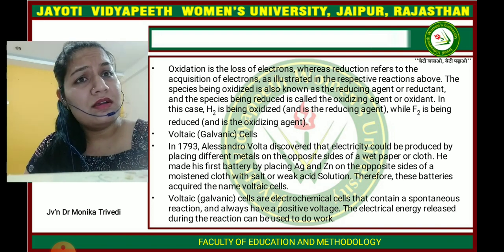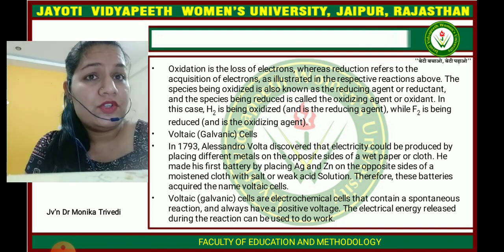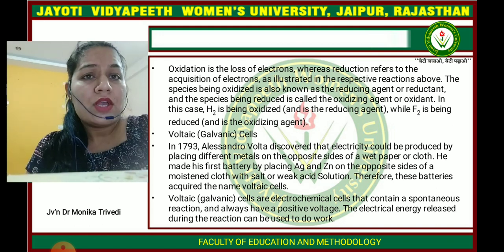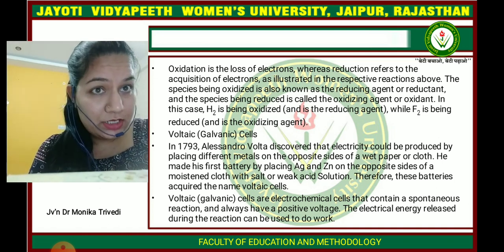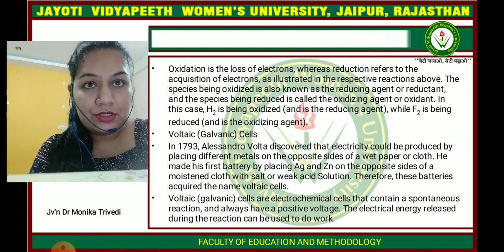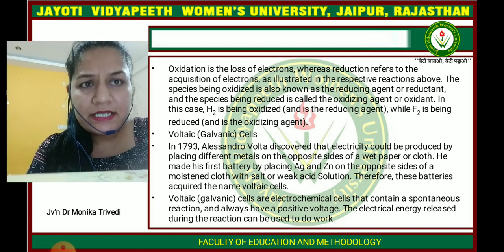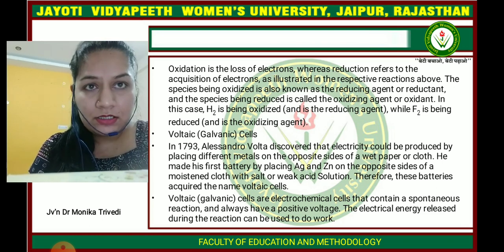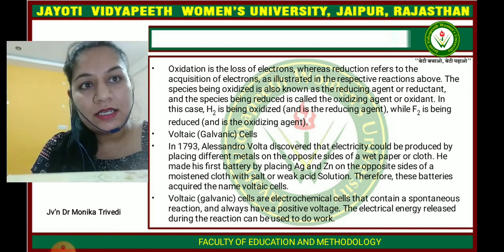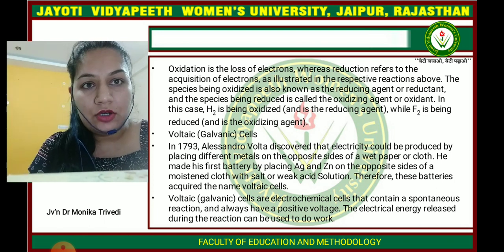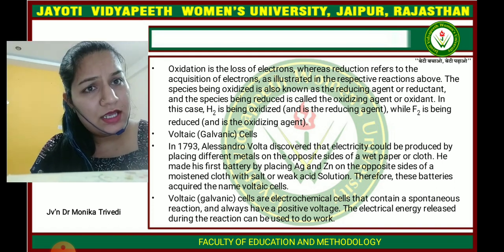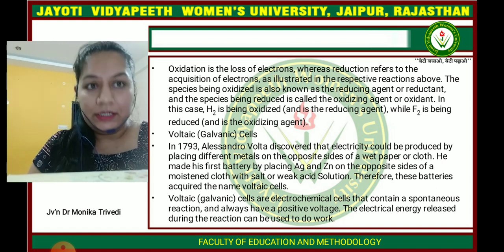The simple cell which converts chemical energy into electricity is known as a galvanic cell. In 1793, Alessandro Volta discovered electricity by placing different metals on opposite sides of wet paper or cloth. He made his first battery by placing Ag and Zn on opposite sides of a moist cloth with a salt or weak acid solution. Therefore, this kind of battery is named as voltaic cells.